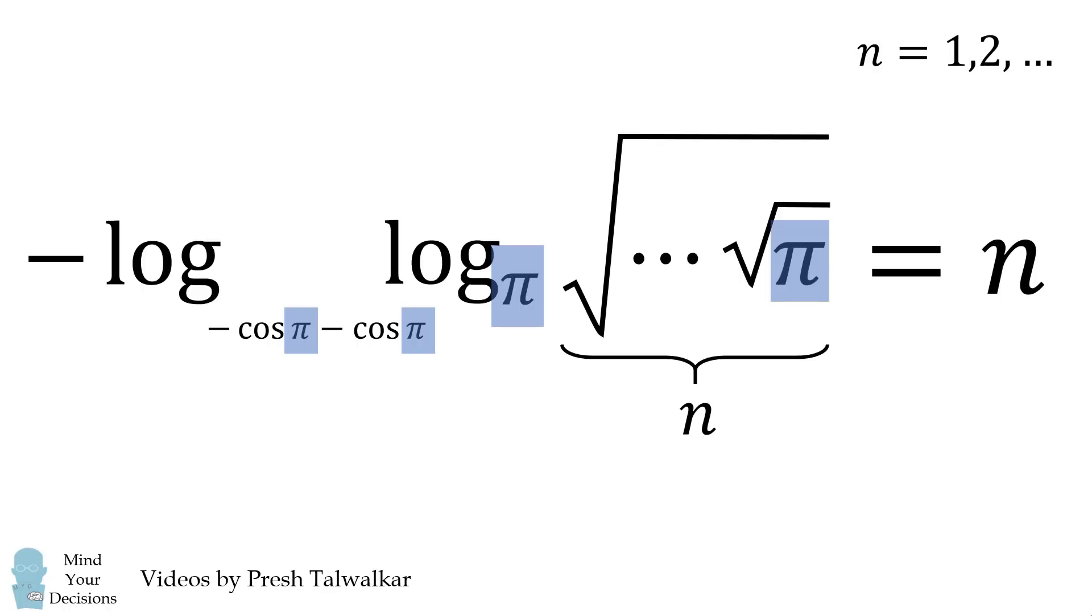This will give all positive integers n. We can change the negative sign into a positive to get all negative values of n. But we have one problem.